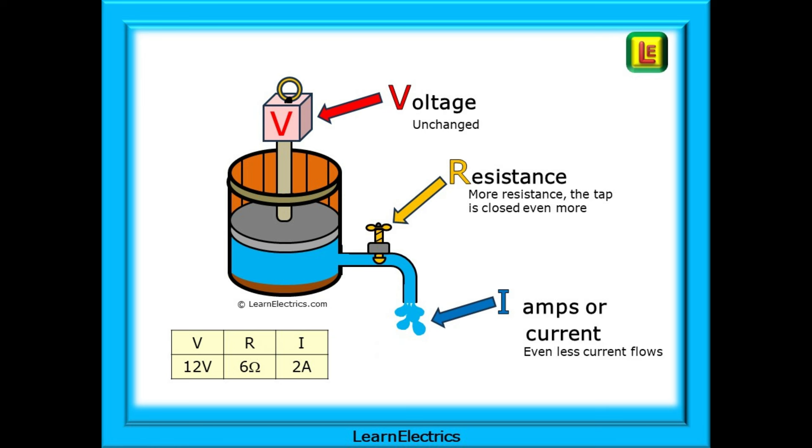In this third example, the voltage has stayed the same at 12 volts, and the resistance is now increased to 6 ohms. The tap is being closed even more. So what happens to the amps, the current? Because the ohms increase, the amps must decrease again, so even less current flows.